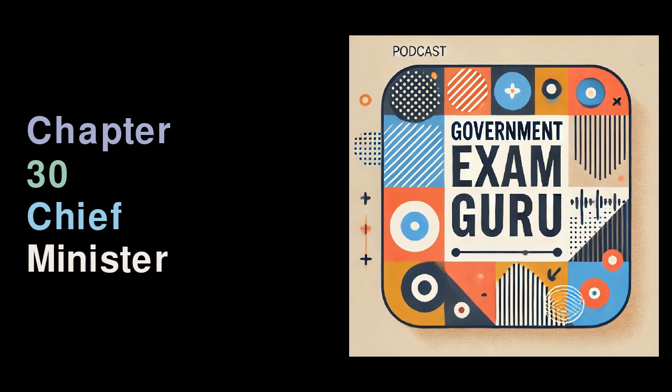Powers of the Chief Minister in Relation to the Council of Ministers: The chief minister holds a significant position as the leader of the Council of Ministers in a state. Firstly, it is the chief minister who recommends individuals to the governor for appointment as ministers. The governor, who serves as the constitutional head of the state, can only appoint those individuals suggested by the chief minister. This means that the chief minister has control over who is part of the ministerial team, thus ensuring that the government runs smoothly with trusted colleagues.